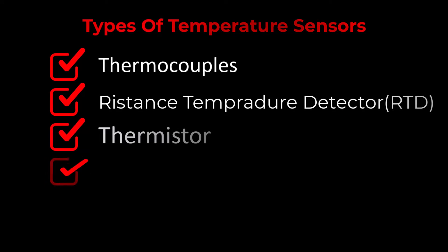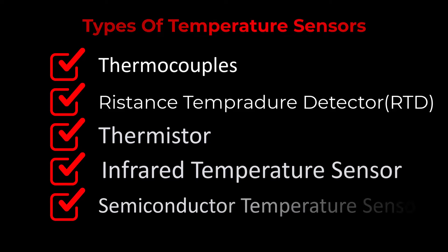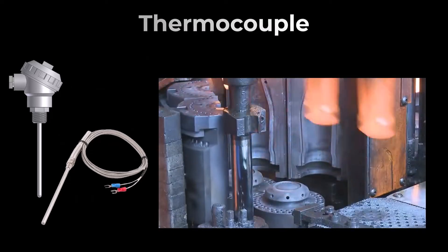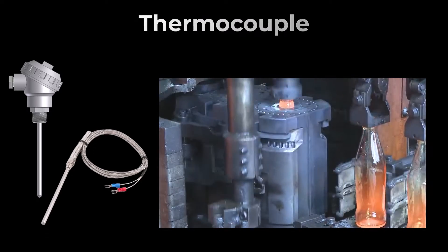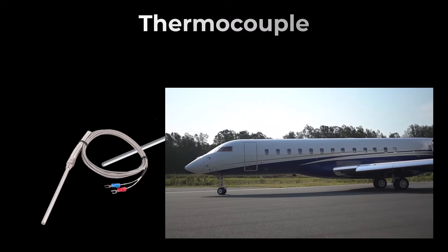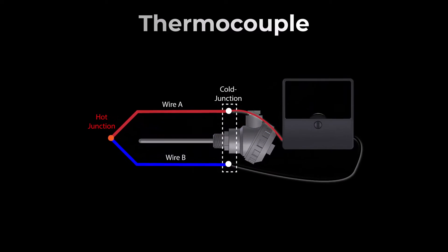There are many different types of temperature sensors, each with its own advantages and disadvantages. Some of the most common types will be explained in this video. First up, we have the thermocouple — generating voltage like magic. These sensors are found in industries, automotive, and even in the vastness of aerospace. A thermocouple is a temperature sensor that generates a voltage proportional to the temperature difference between two junctions of different metals.